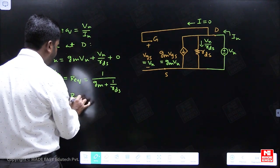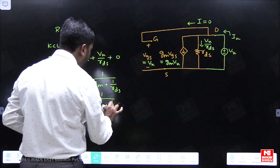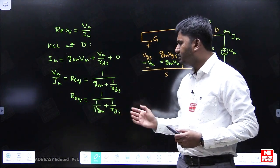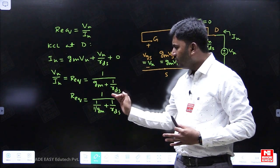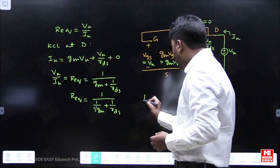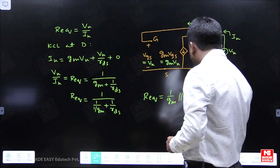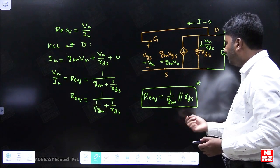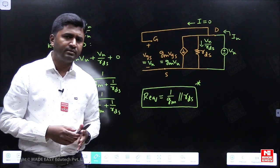R_equivalent = 1 / (GM + 1/RDS), which can be written as 1 / (1/(1/GM) + 1/RDS). This is in the form of a parallel combination, so R_equivalent = (1/GM) ∥ RDS. When you come across a MOSFET with drain and gate shorted, the equivalent resistance is (1/GM) ∥ RDS.